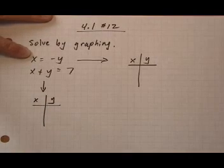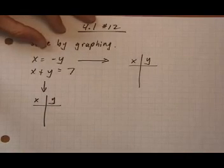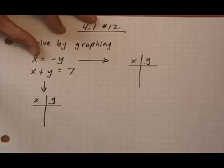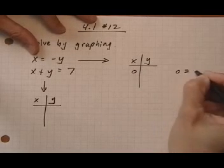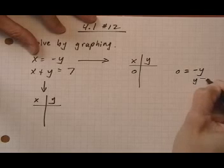And we can pick whatever we want to plug in for x and y. I think for this first one, I'm going to put in x as 0 first and see what I get. If I put x as 0, I get 0 equals negative y, or y equals 0.